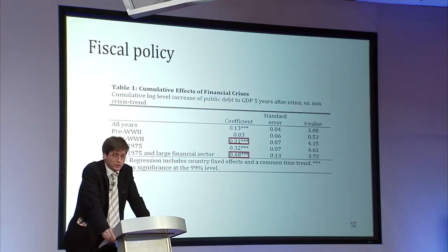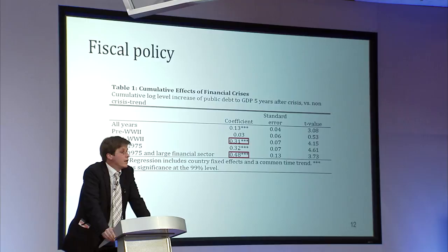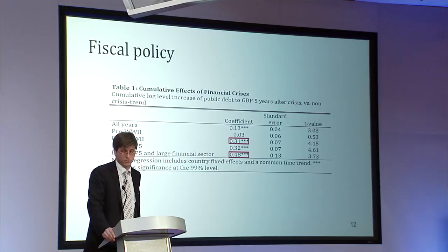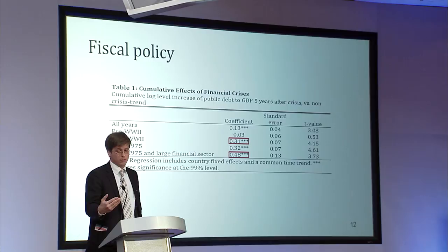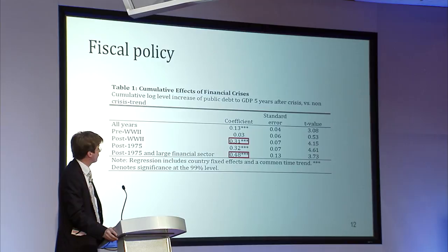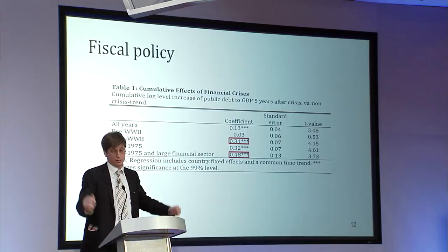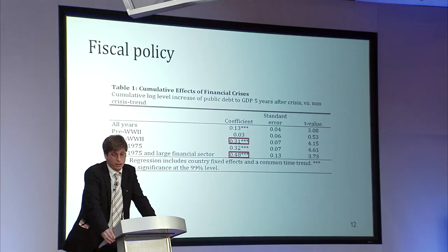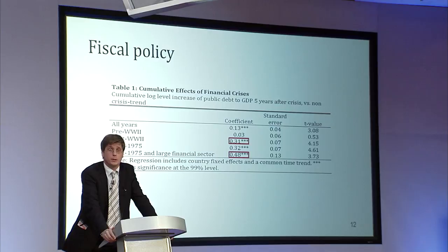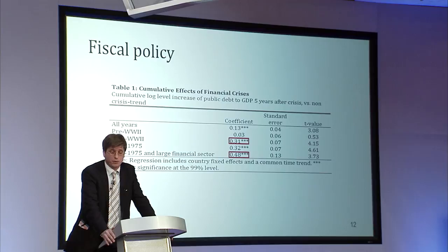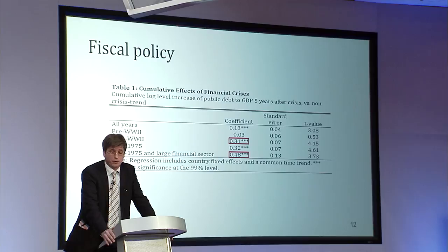It's very much the same story for fiscal policies. This table tells you the cumulative increase in public debt in the five years following a financial crisis, relative to country-specific trends. A 13% cumulative increase in the public debt-to-GDP ratio occurs following a financial crisis over these 140 years. But the real story is in the breakdown by era: pre-World War II, there's next to nothing; post-World War II, public debt to GDP increases by about 31% cumulatively. And for the post-1975 era in countries with large financial sectors, we're up to 50% — which is still relatively low compared to what we're seeing in many countries right now.